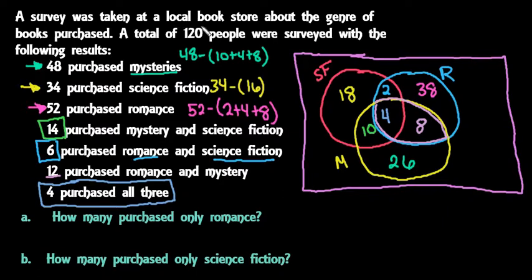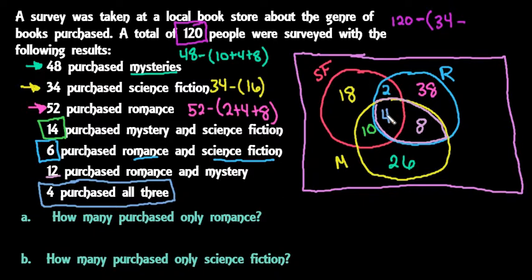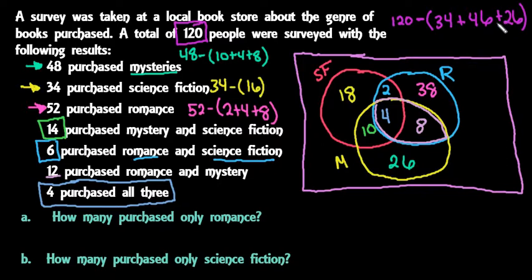We have a total of 120 people surveyed, so we may have people on the outside. We take 120 minus all the numbers added together. Adding up: 18 plus 2 plus 4 plus 10 plus 38 plus 8 plus 26 equals 106. So 120 minus 106 gives us 14 on the outside — people who did not purchase any of these three genres.